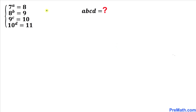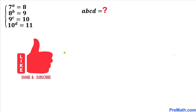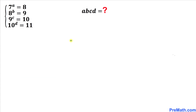Welcome to pre-math. In this video we have a system of equations: 7 to the power a equals 8, 8 to the power b equals 9, 9 to the power c equals 10, and 10 to the power d equals 11. We are going to find the value of a times b times c times d. Please don't forget to give a thumbs up and subscribe. Let's go ahead and get started with the solution.